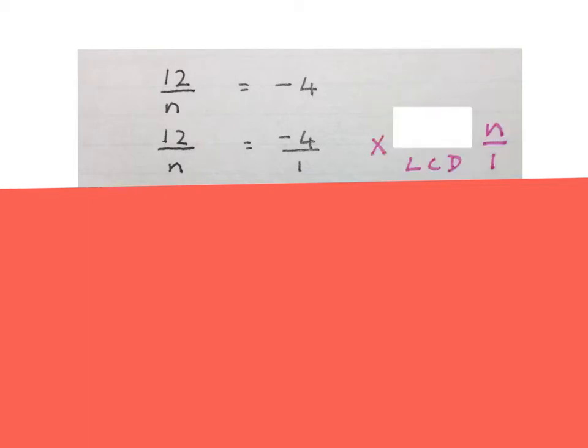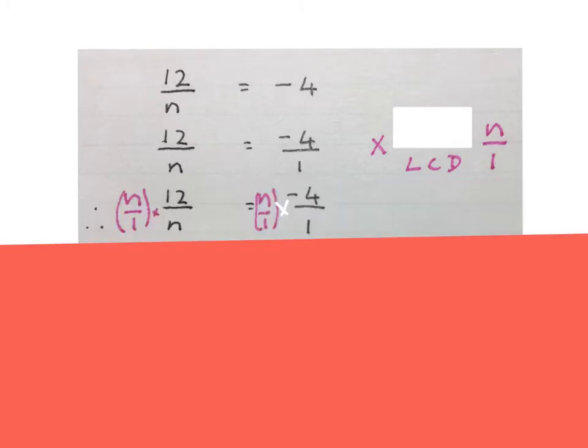So we times every term both of them by the LCD in this case which is n. The bottom here is n and 1 and the LCD of those two is n. So we write n over 1 times in front of each one of these terms. So we are going to times both of them by the n over 1.